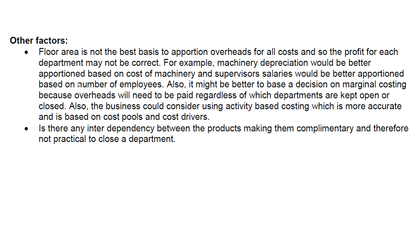It might be better to base a decision on marginal costing, because the overheads will need to be paid regardless of which departments are kept open or closed. If you look up decision-making in your accounting textbooks, you'll see it's largely based on marginal costing — whether to close a loss-making department, whether to make or buy, whether to accept extra work — all based on contribution, because overheads don't tend to change in line with output unless they are stepped at a particular level. Activity-based costing, based on cost pools and cost drivers, should give a fairer way of sharing overheads. Also consider interdependency between products — are they complementary? If one department makes shaver handles and another makes blades, you can't sell one without the other.